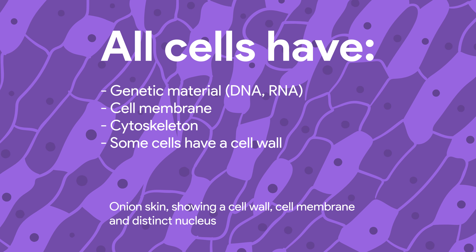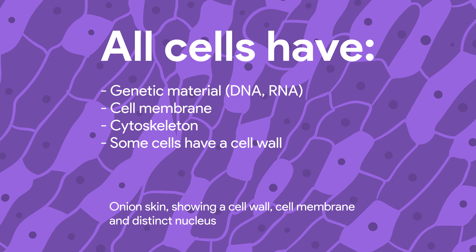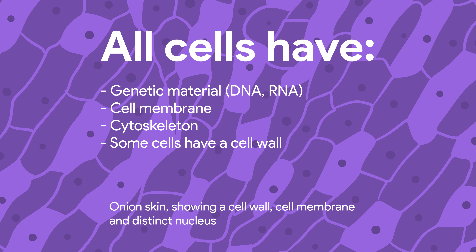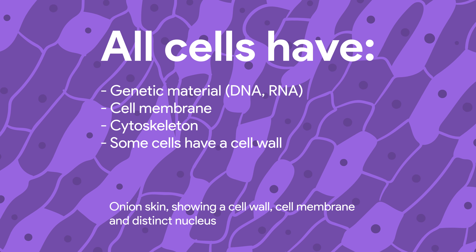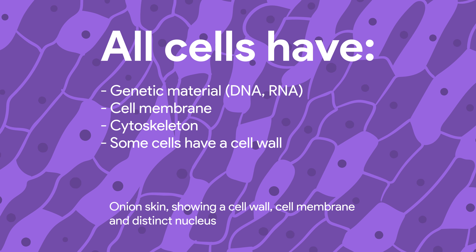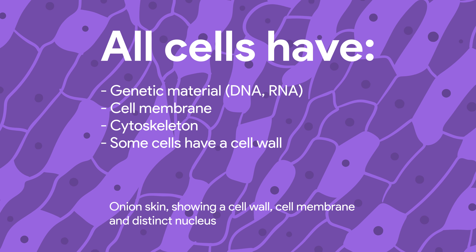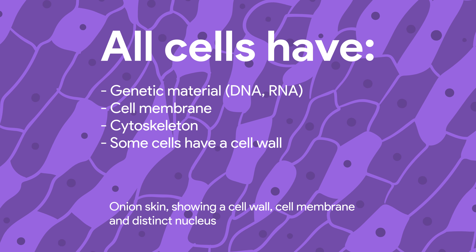The membrane and the cytoskeleton contribute to the cell's organisation, structure and shape. All cells are enclosed by a cell membrane, also called a plasma membrane. Some cells have a cell wall enclosing the outside of the cell membrane. The cytoskeleton is different to both of these — it is inside the membrane. Animal cells do not have a cell wall, but many other eukaryotic cells do. These include plants, fungi and many protozoans. Cell walls help give the cell its shape and make it more rigid.